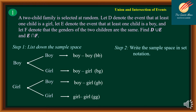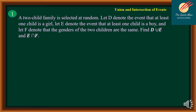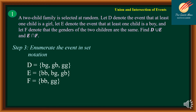Step number two is to write the sample space in set notation. Step number three is to enumerate the events in set notation. D denotes the event that at least one child is a girl, so we have BG, GB, and GG. E stands for the event that at least one child is a boy, so we have BB, BG, and GB. F denotes that the genders of the two children are the same, so we have BB and GG.